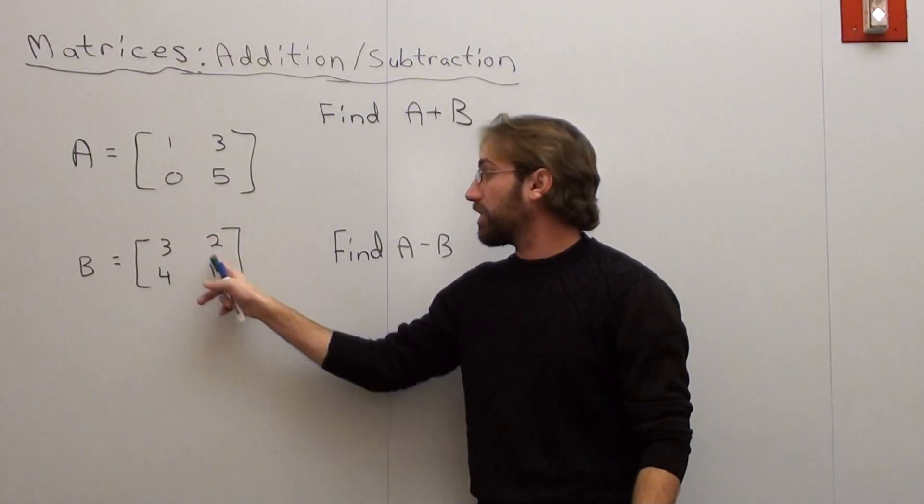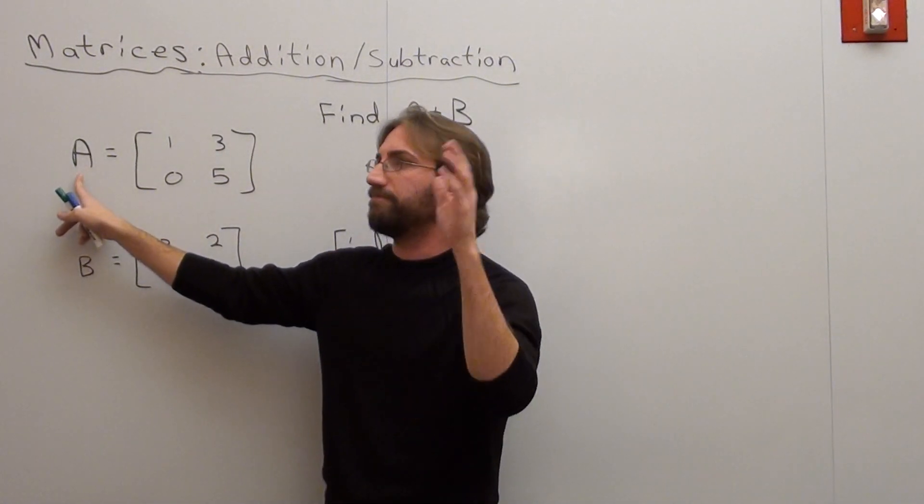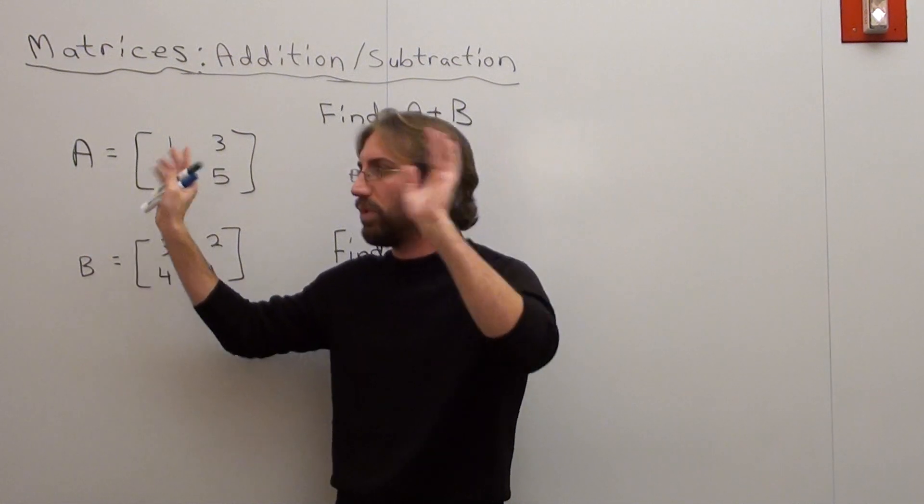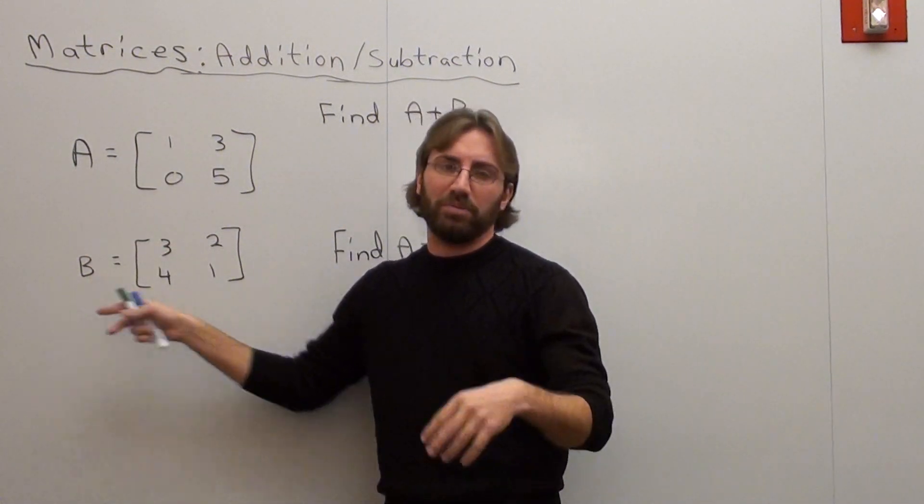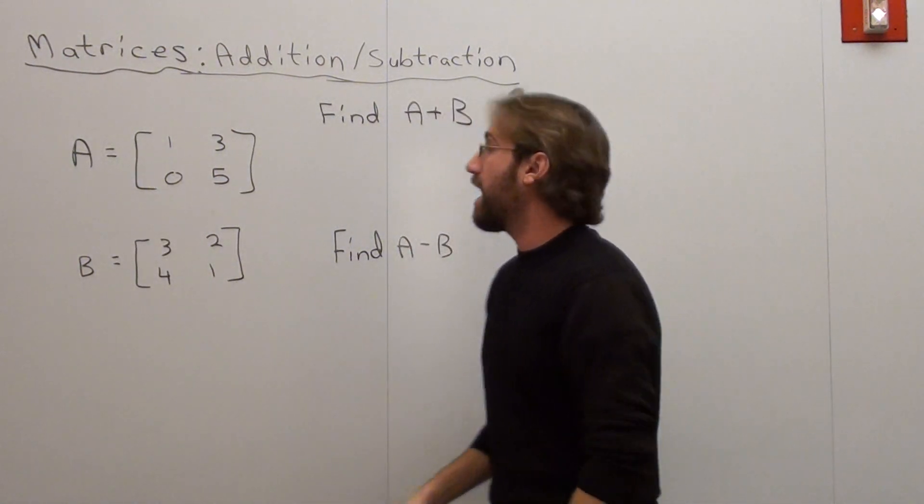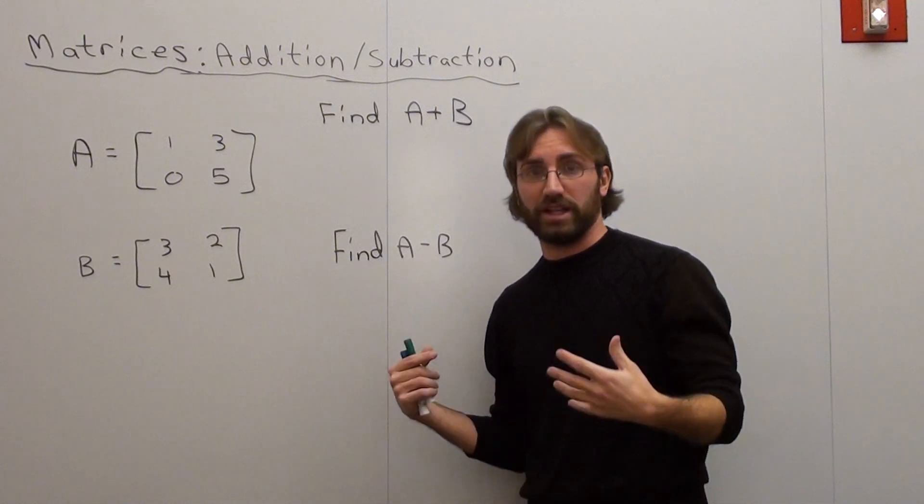and matrix B: 3, 2, 4, 1. You can call any matrix whatever you want - Z, D, F, K, whatever. But for the sake of simplicity, we're going to call this matrix A and this matrix B. I want to find A plus B and I want to find A subtract B.